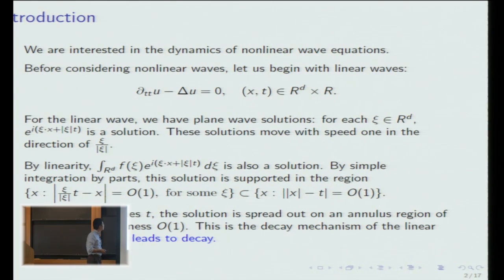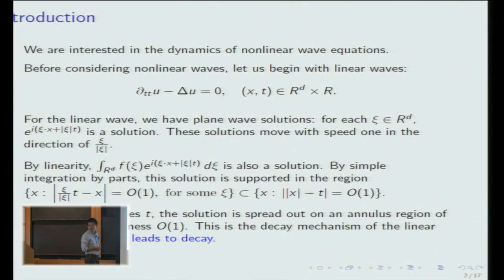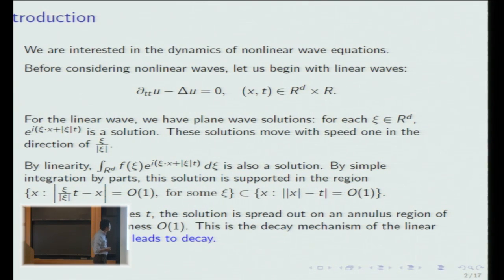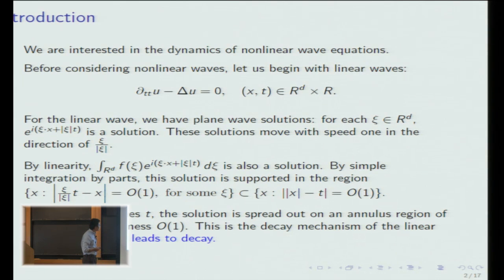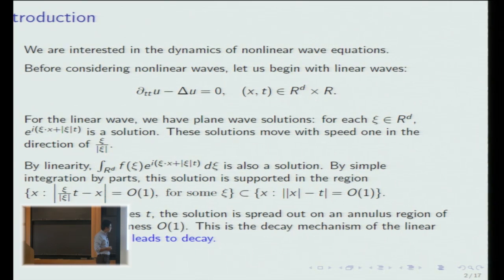Because this is one solution, and then by linearity, you can form more solutions. You just linearly combined with traveling wave solutions, you get a general solution. Then for this solution, if you integrate by parts in ψ, then you get a factor. You integrate in ψ, you get a factor, which is this guy minus one.